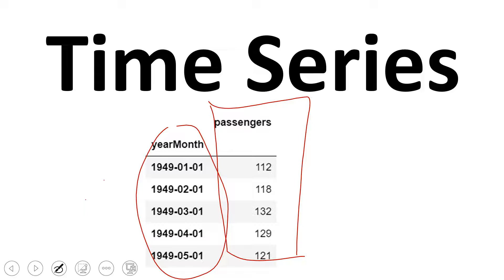This data is about air passengers, where you have information on the number of passengers for a specific airline, month on month, growing or decreasing. Using this data, in this exercise we will try to predict the number of passengers at a certain point of time. That, in a nutshell, is what time series analysis is and what we use it for.